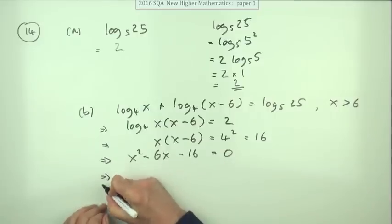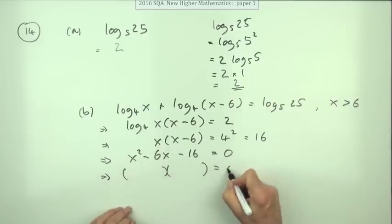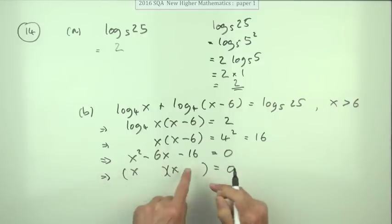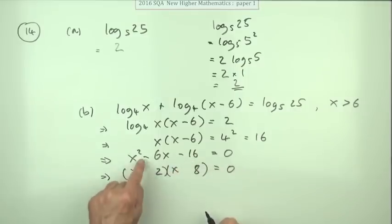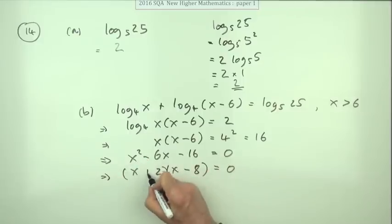Multiply to give 16 with a difference of 6, it would be 2 and 8. The negative goes to the 8. That says they're opposite, giving me two answers: x equals negative 2 and x equals 8.